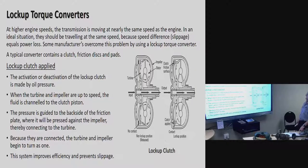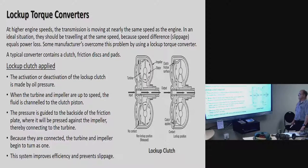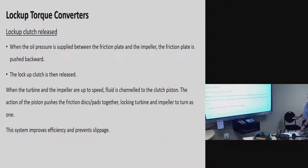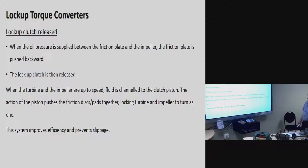A typical converter contains a clutch with friction discs and pads. The lock-up clutch activation or deactivation is controlled by oil pressure. When the turbine and impeller reach the same speed, fluid is channelled to the clutch piston. The pressure is guided to the backside of the friction plate, where it is pressed against the impeller, thereby connecting to the turbine. Because they are connected, the turbine and impeller begin to turn as one unit. This system improves efficiency and prevents slippage.